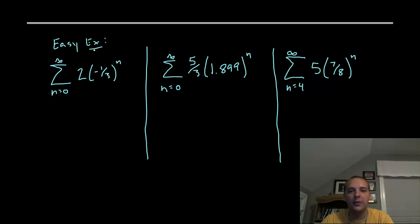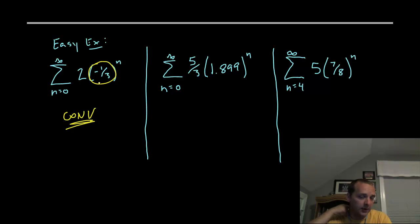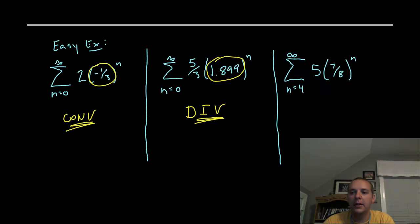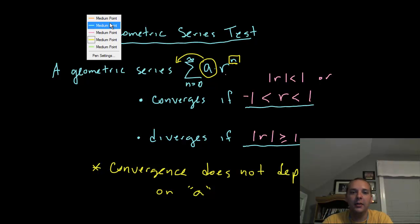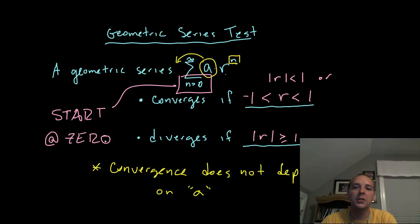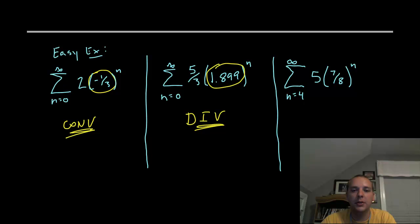Here are some easy examples. The sum from n equals zero to infinity of two times negative one-third to the n clearly converges, because r is between minus one and one. Another example: five-thirds times 1.899 to the n — that clearly diverges because that r is greater than one. It should be noted that to technically be a geometric series, the series must start at zero. It's one of the only series types that starts somewhere other than one — most series go from one to infinity, but geometric series must start at zero.